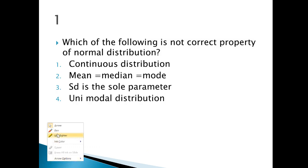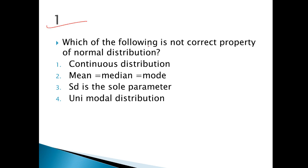Let's see how many revisions have been in your stats. Which among the following is not a correct property of normal distribution? Option 1: Continuous distribution. Yes, we know that normal distribution is a continuous distribution.